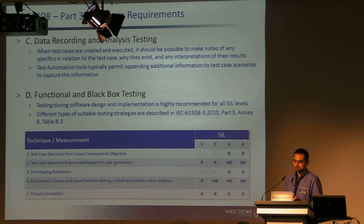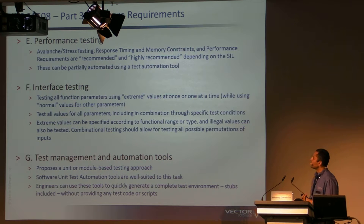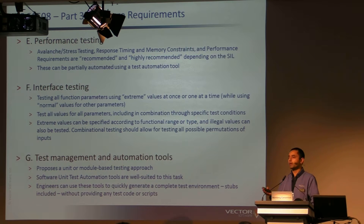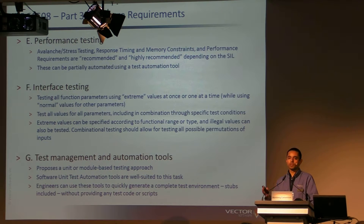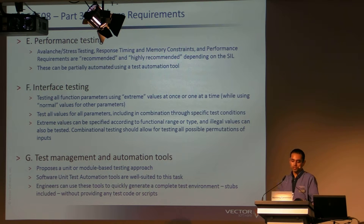Performance testing covers things like avalanche testing, response timing, memory constraints, and performance requirements. For example, some projects have a spare capacity requirement of 50% — the processor should never be loaded more than 50% and there should be at least 50% RAM available. Coming up with stress situations in your application, looking at the worst possible or most stressful scenarios in which the code can be executed, and then building test cases to replicate that situation so you can make sure that under those conditions it behaves correctly.